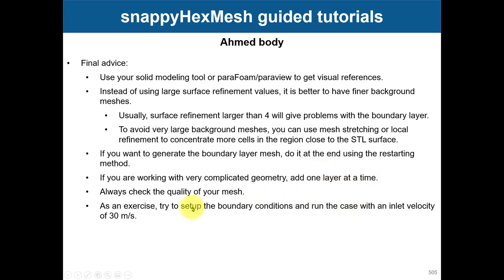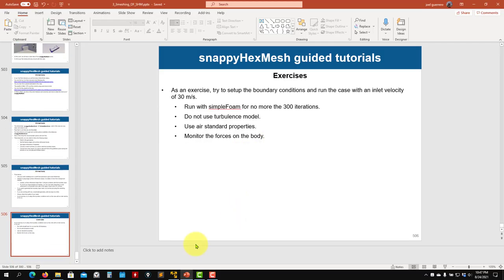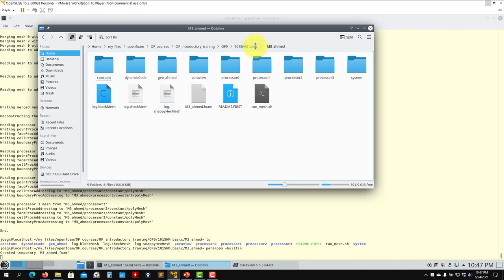Instead of putting in three, five, or seven layers at once, put one and then add another — it tends to work well, though it's a little time consuming. Always check your mesh quality and topology, regardless of how simple the geometry is. As an exercise, try to set up this case to run with a boundary condition velocity of 30 meters per second.